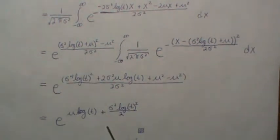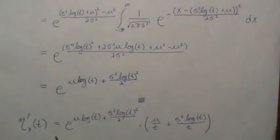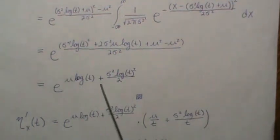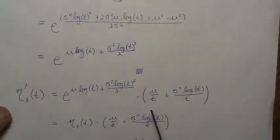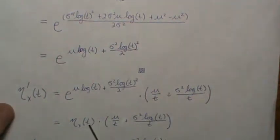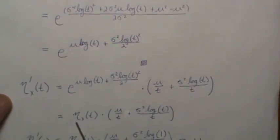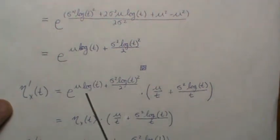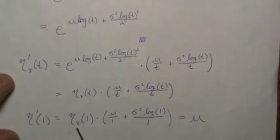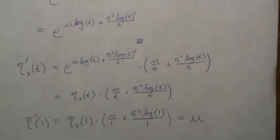Let's use it. The first derivative of eta, since it's e to a function of t, gives back eta times the derivative of the exponent. Evaluating at t equals 1, log of 1 is 0 so the exponential term is 1, and we get mu — the mean of the normal distribution.